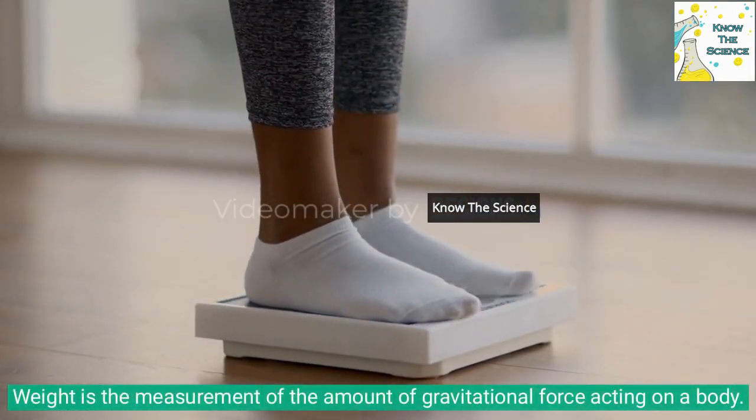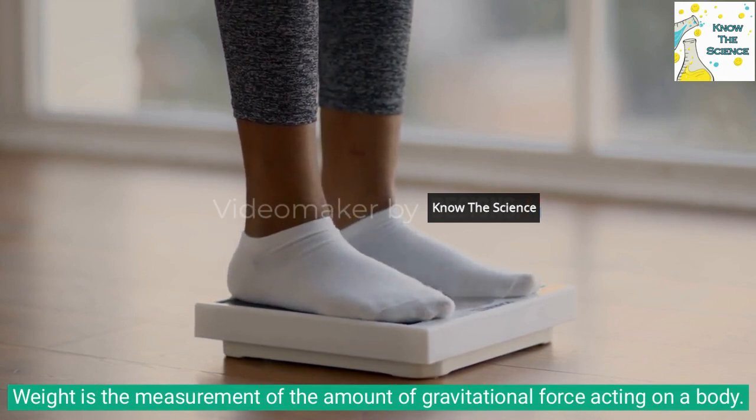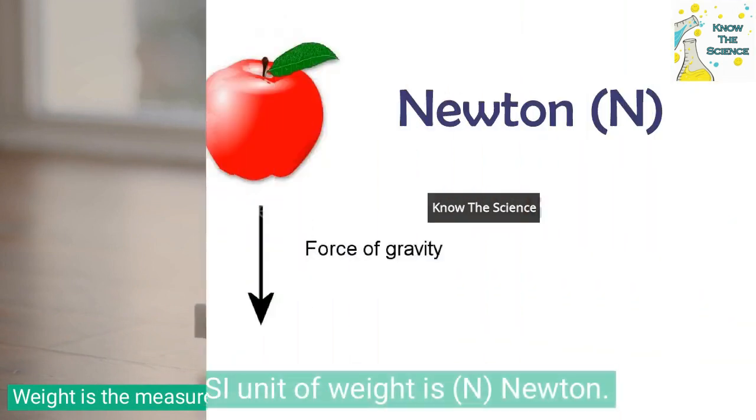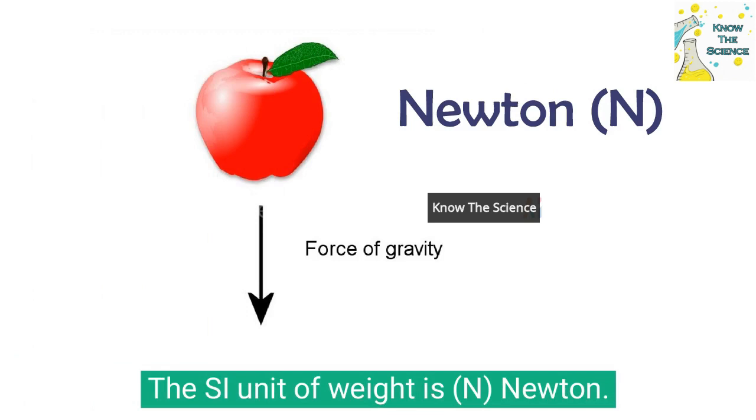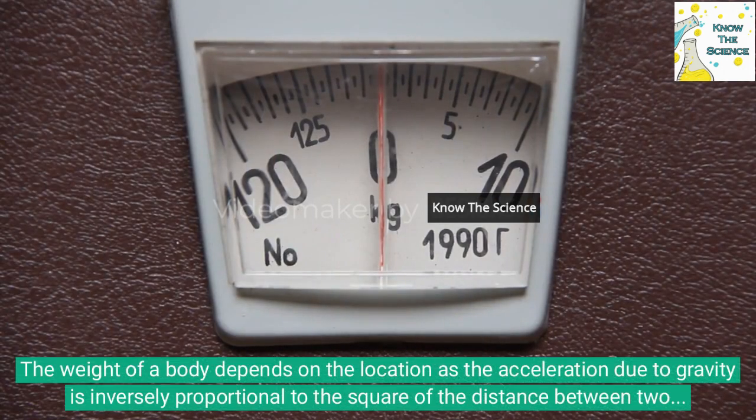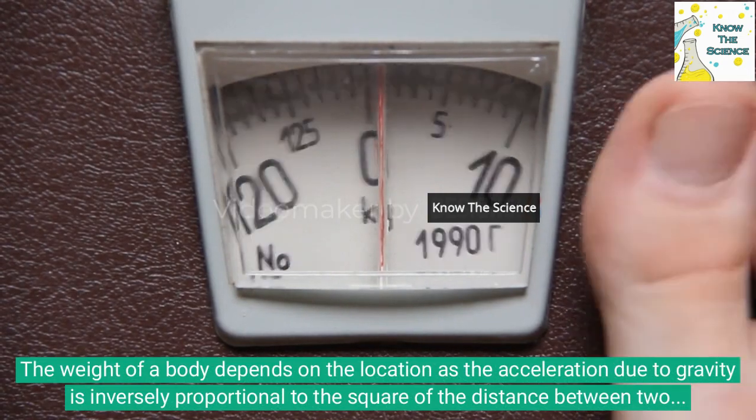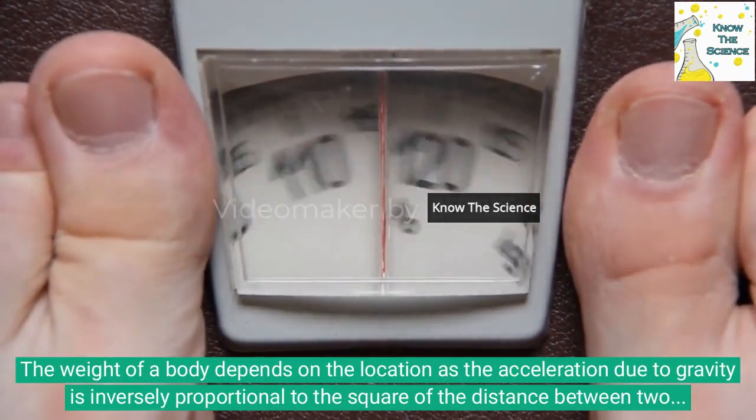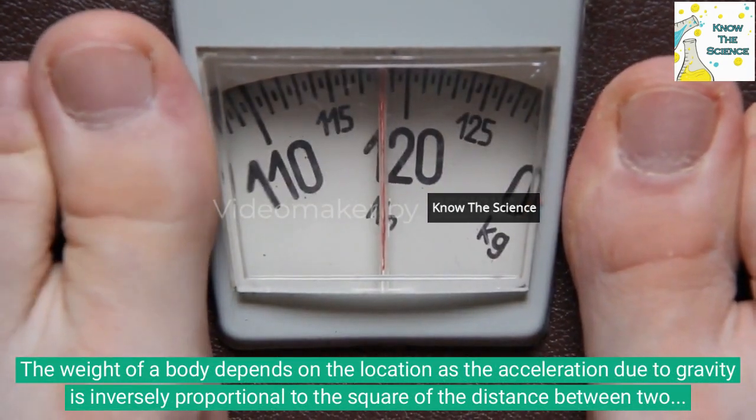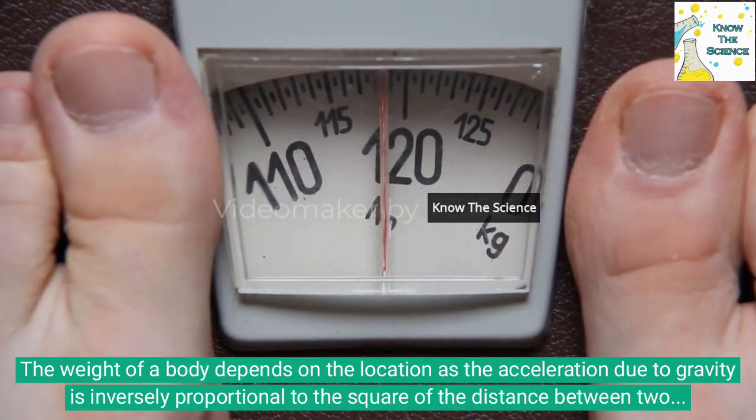Weight is the measurement of the amount of gravitational force acting on a body. The SI unit of weight is Newton. The weight of a body depends on the location as the acceleration due to gravity is inversely proportional to the square of the distance between two objects.